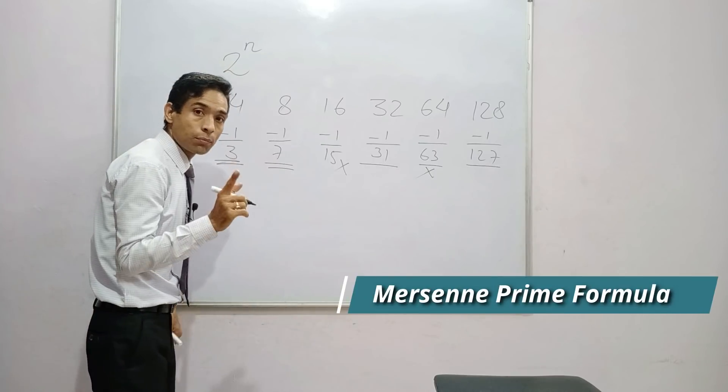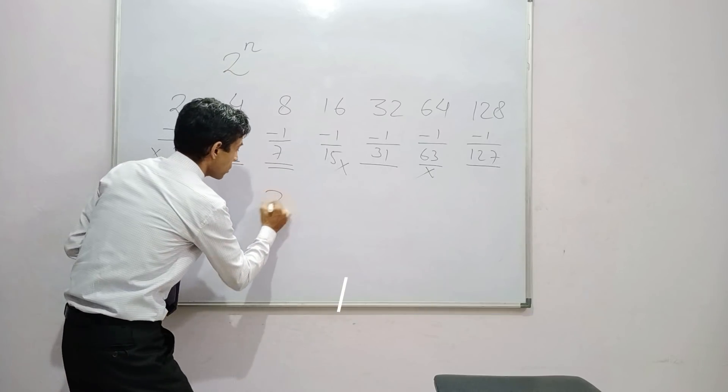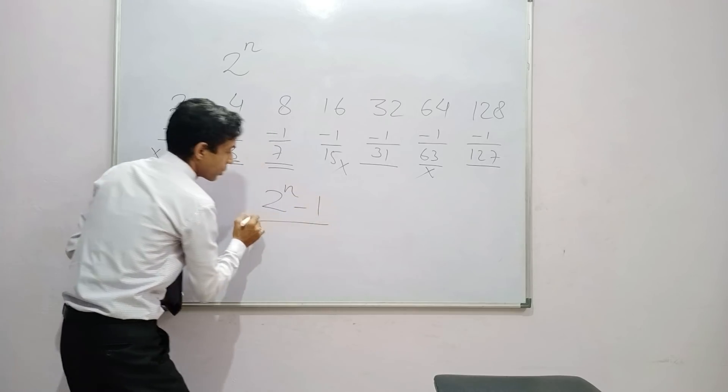Therefore, the Mersenne prime number formula is 2 to the power N minus 1.